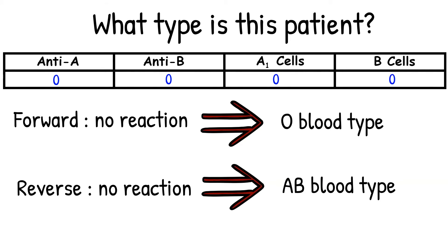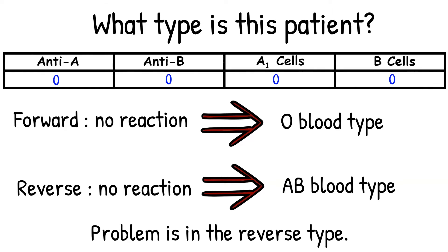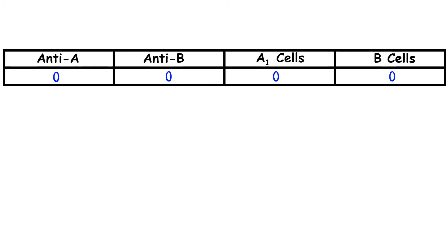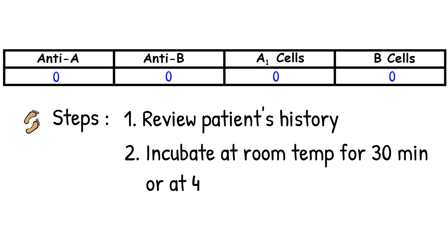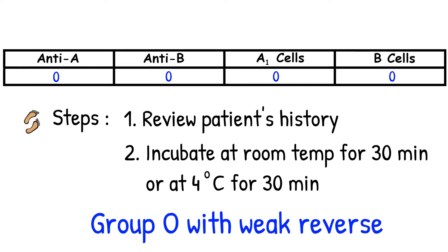The red blood cell reagents are usually reacting really strongly. So my first thought is missing reactions in the reverse typing. This means that the patient is potentially type O but missing anti-A and anti-B in the patient's plasma. I will assume that I did everything correctly and get the same reactivity when I repeat. First, check the age of the patient and the patient diagnosis. Second, incubate the test at room temperature for 30 minutes or at 4 degrees Celsius for 30 minutes, or you can do both. Third, read the reaction again. If the reverse comes up, you can confirm that the patient is group O with weak expressions in the reverse typing.